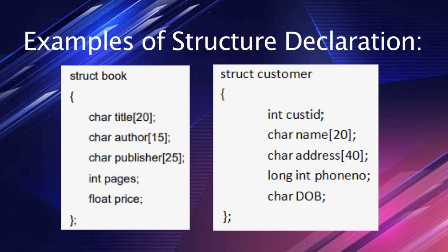For the customer structure, an integer variable is declared for storing the customer ID. A character array is declared for the name, another character array for the address, a long integer for the phone number, and a character variable for the date of birth.